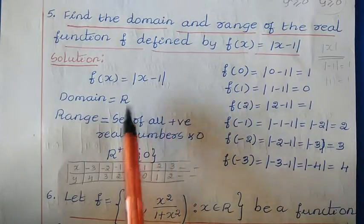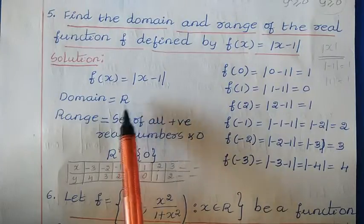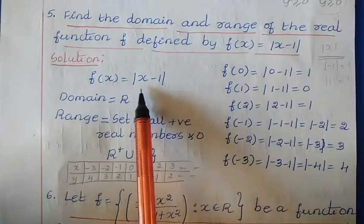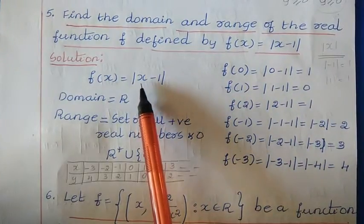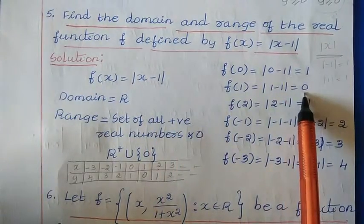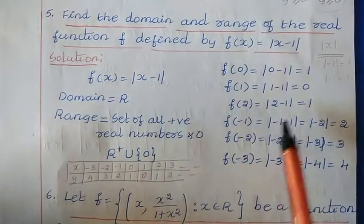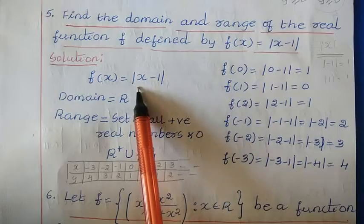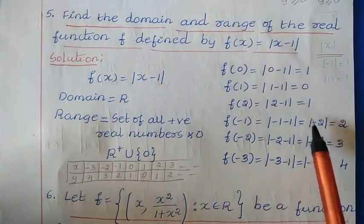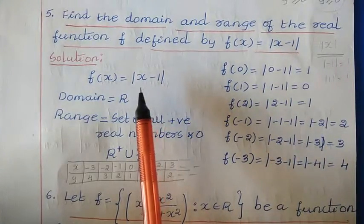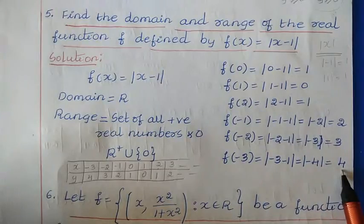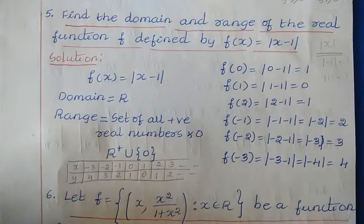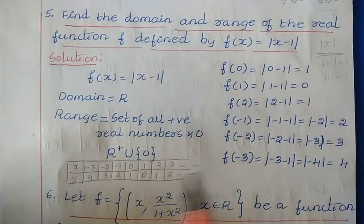Next, we need to find out the range. As we can give all kinds of values, positive as well as negative, for this function: if I give x = 0, then |0 - 1| = |-1| = 1. If x = 1, then |1 - 1| = 0. If x = 2, then |2 - 1| = 1. If x = -1, then |-1 - 1| = |-2| = 2. If x = -3, then |-3 - 1| = |-4| = 4. So whatever input you give, either positive or negative, you get only a positive answer. That means the set of positive real numbers as well as 0 belongs to the range.